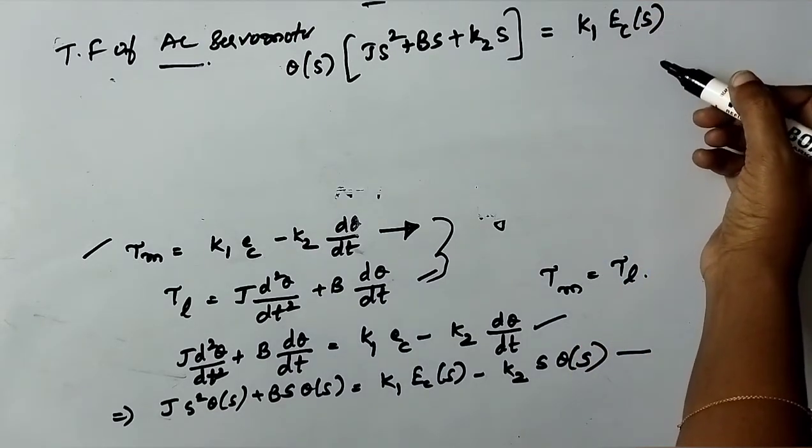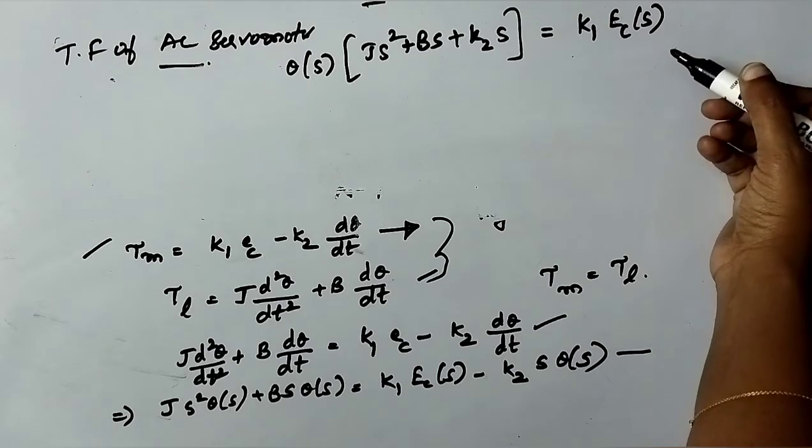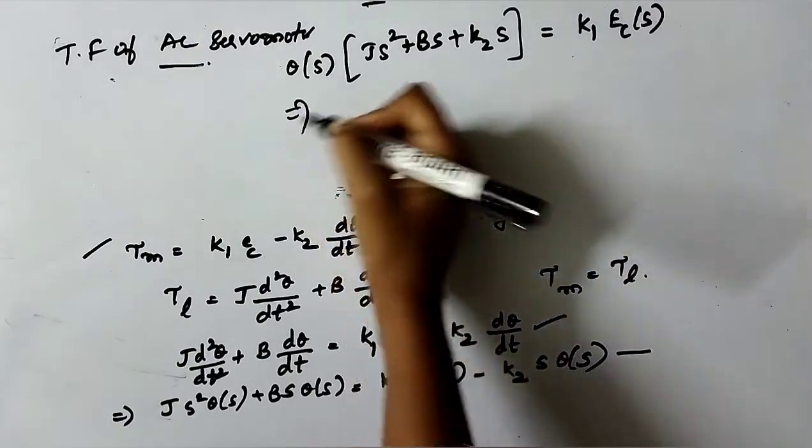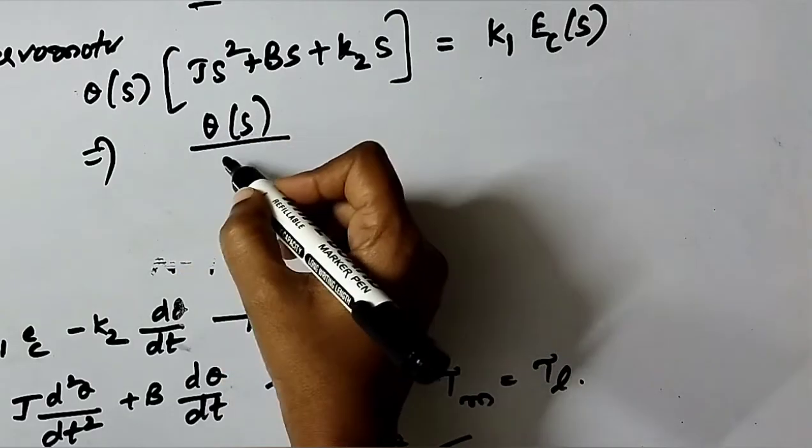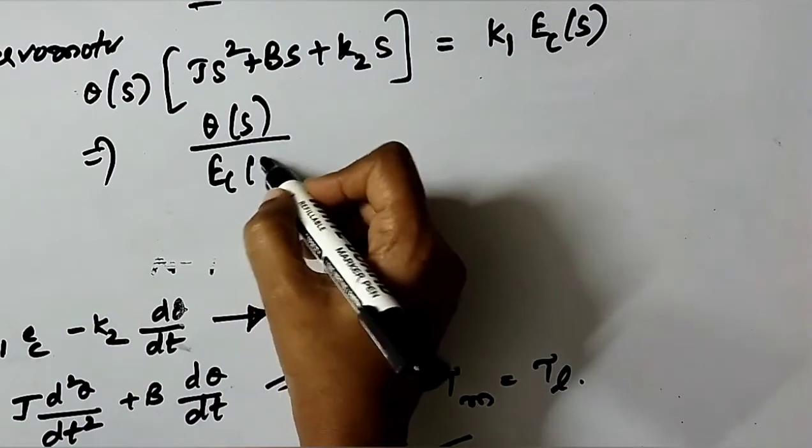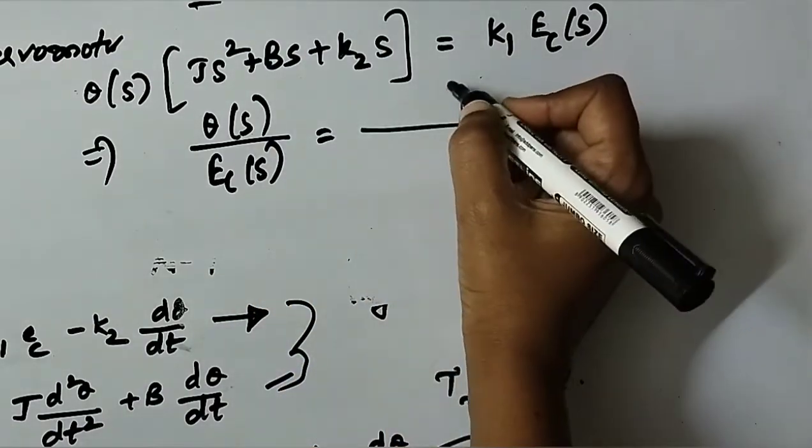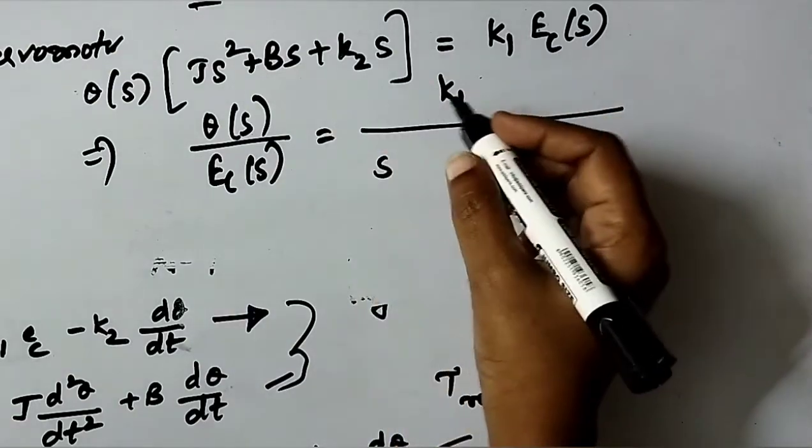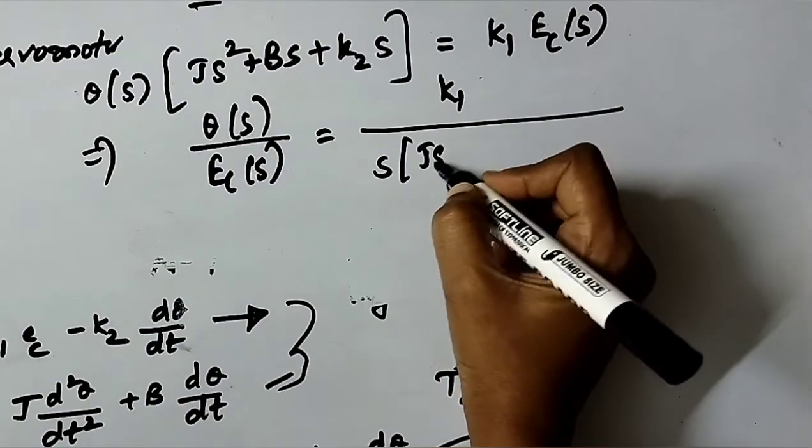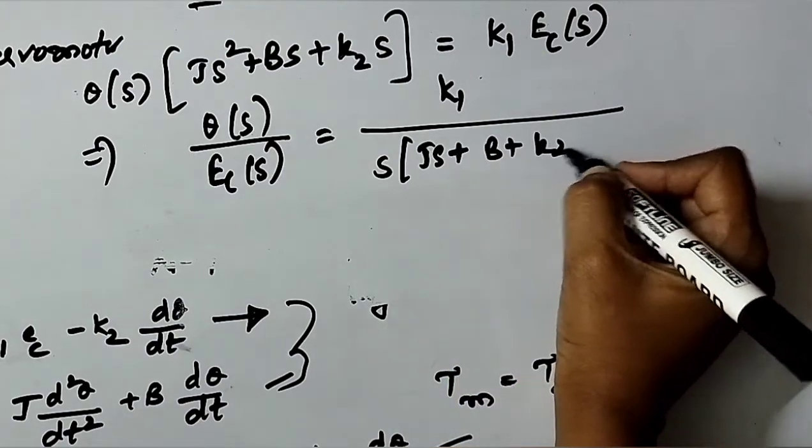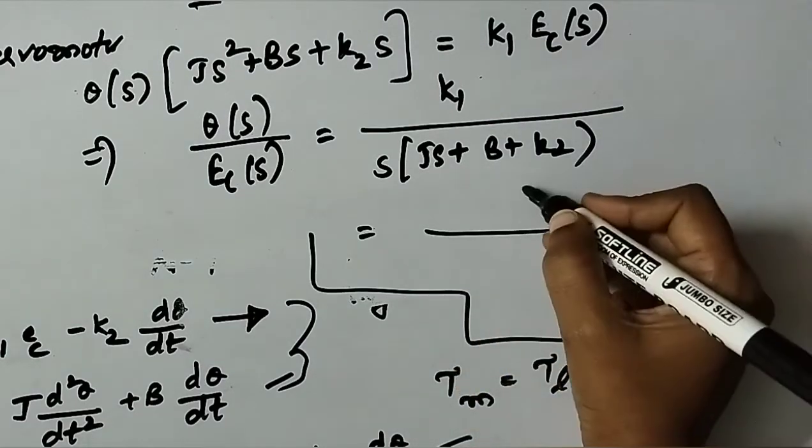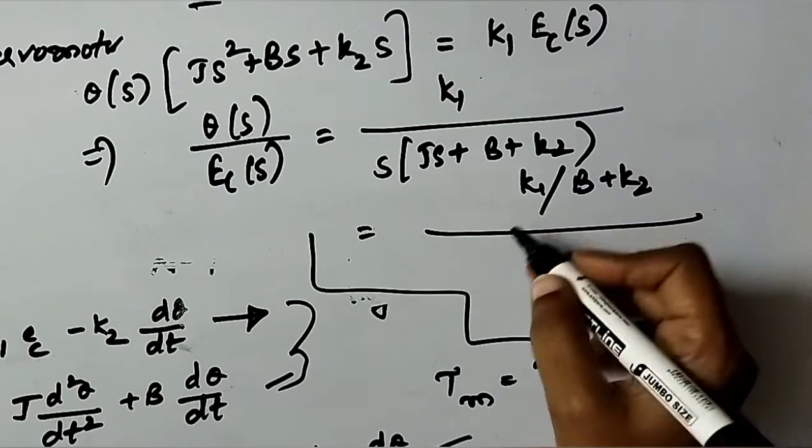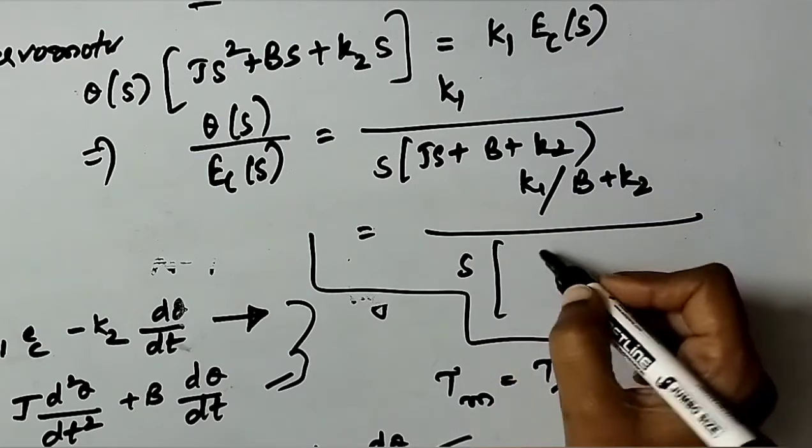Now, here, output θ(s)/Ec(s) = K1/(s(J·s + B + K2)). This will write in terms of K1/(B + K2) · 1/(s(J/(B + K2)·s + 1)).